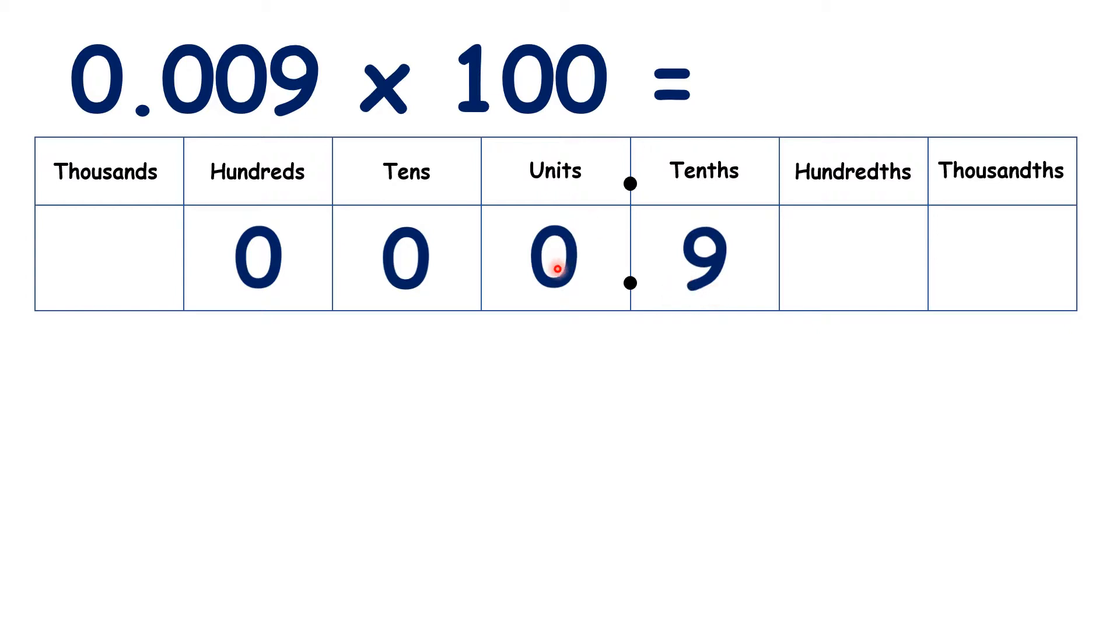So now, we always need to keep a digit in the units, so we need to keep this 0, but we can ignore the 0s in our tens and hundreds, so our answer is 0.9.